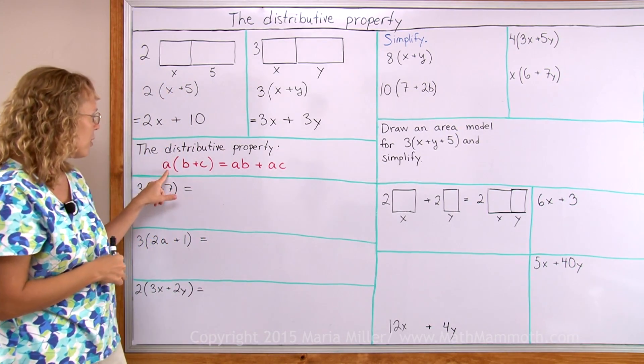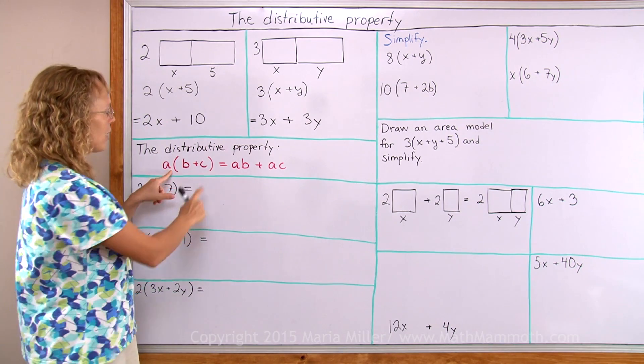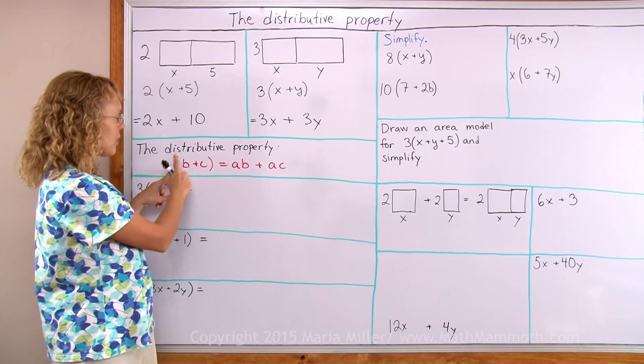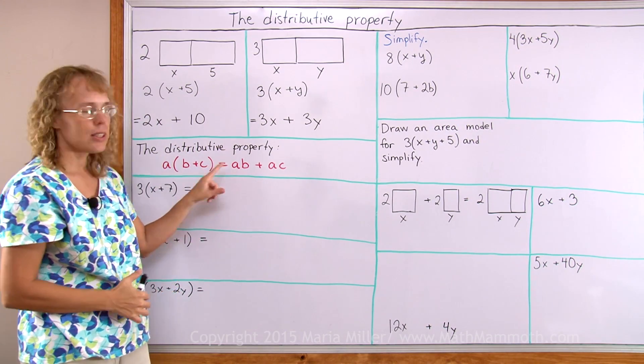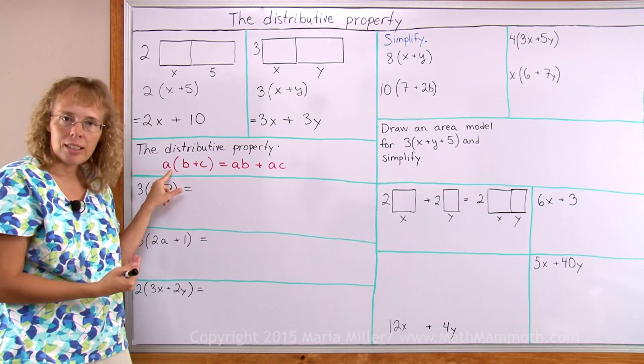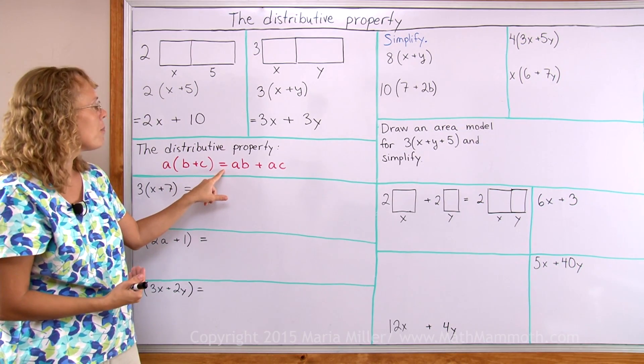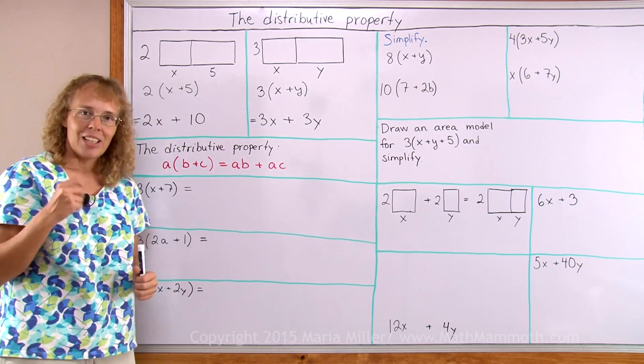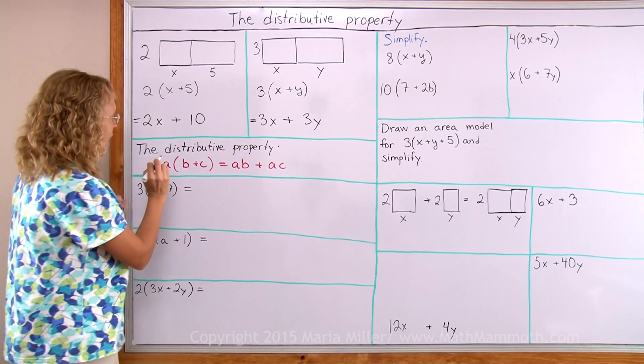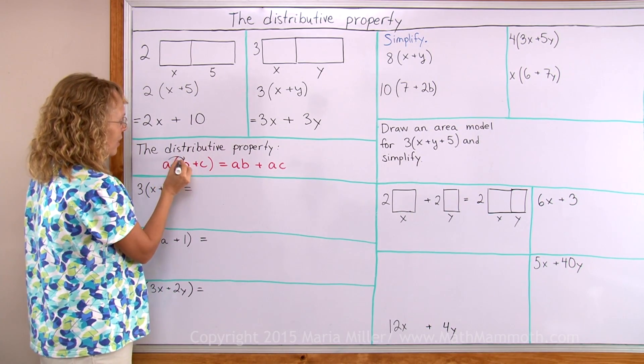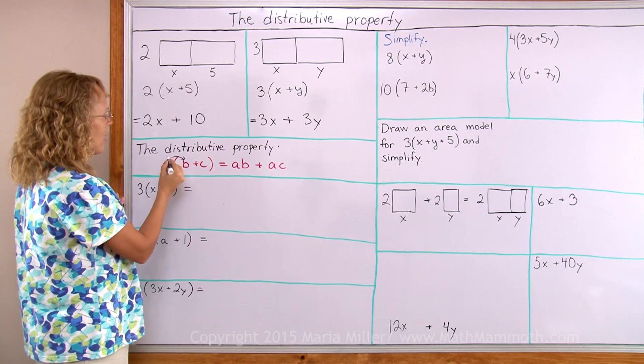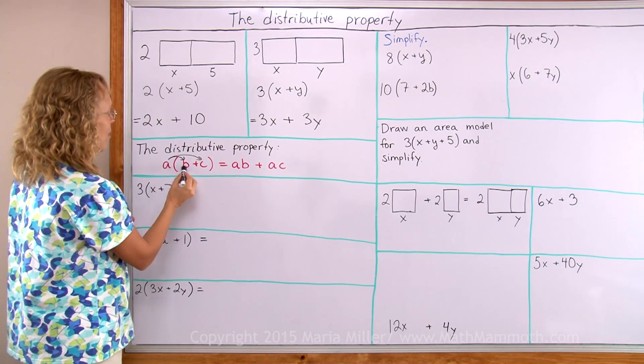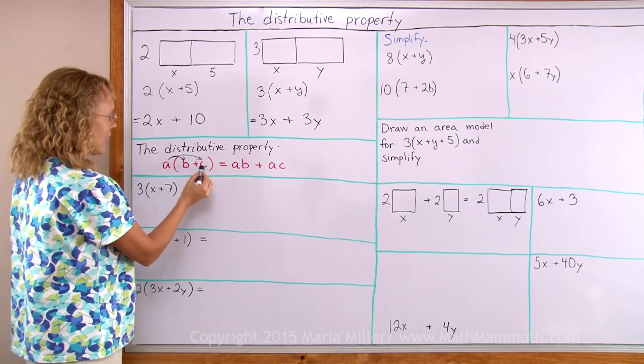If I have a number here and then multiplied by some sum in parentheses then it is equal to this. a times the quantity b plus c is equal to a times b plus a times c. And most often in math books you see these little arrows that the a goes to multiply b and the a goes to multiply c too. So that's ab and then plus ac.